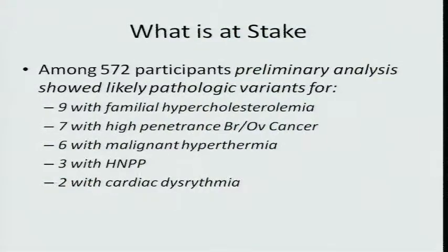We're committed to re-annotating every variant as the underlying data change. What is at stake here is that there is important stuff to be found. We found seven individuals who had high penetrance cancer susceptibility loci, as well as patients with familial hypercholesterolemia, a surprising number of patients with malignant hyperthermia variants at a startlingly high percentage compared to what is predicted, patients with hereditary liability to nerve and pressure palsy at a frequency of about 100 to 200 times the predicted population rate, and patients with potential cardiac dysrhythmia genes. We're struggling hard with these data and tools to make this more efficient and effective.